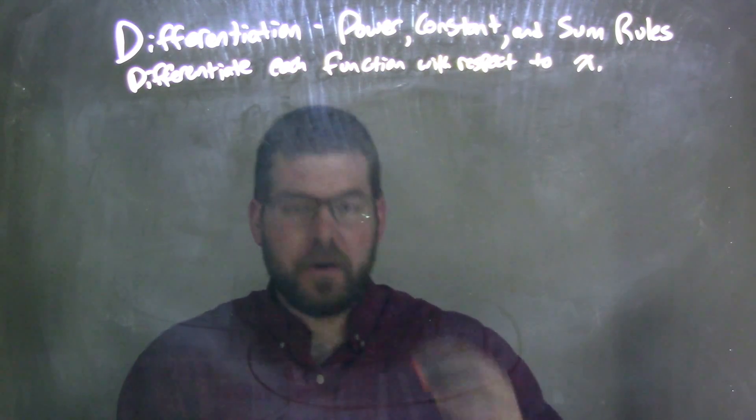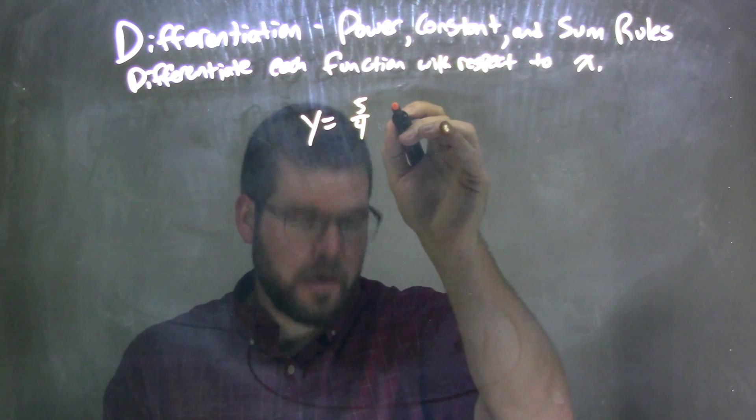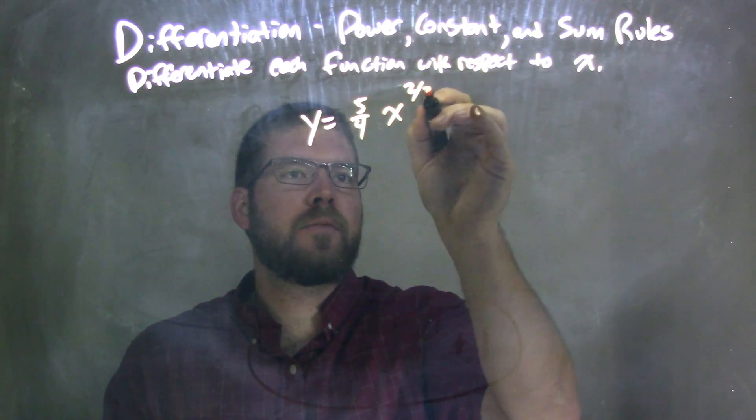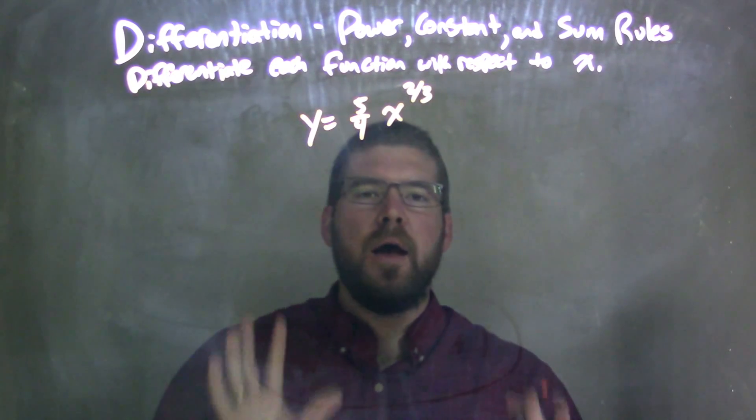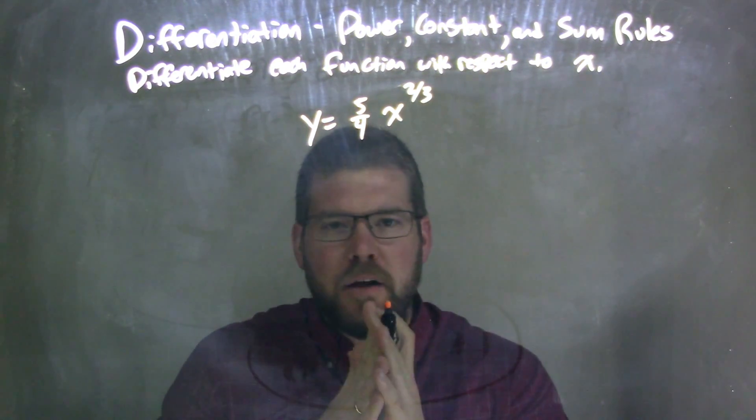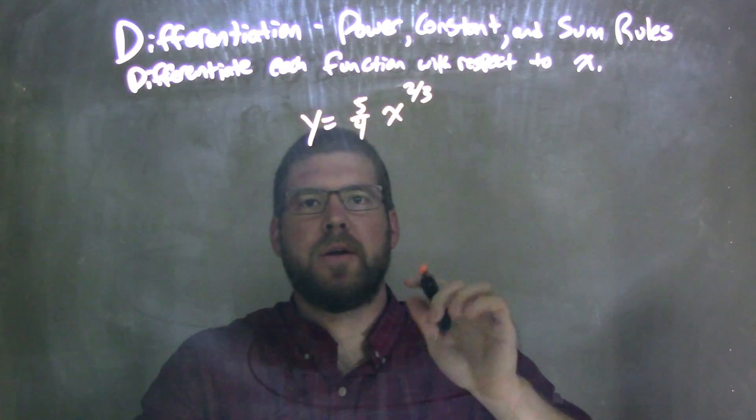So we're given this function: y equals 5 fourths x to the 2 thirds. When people see fractions, they start freaking out. Don't worry about it. All we need to do is follow the power rule here.